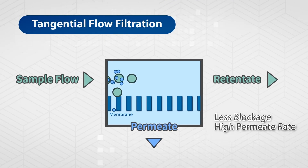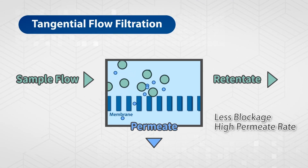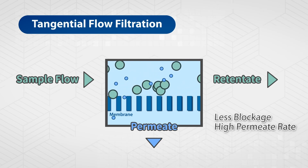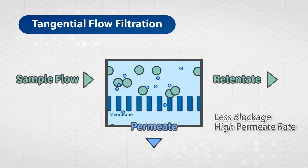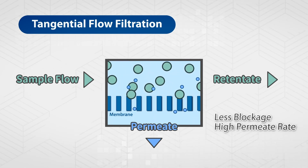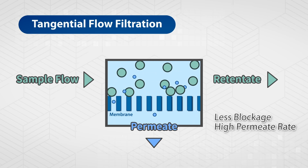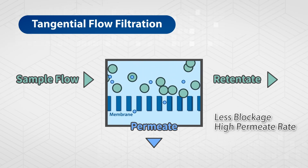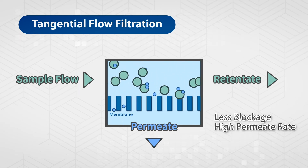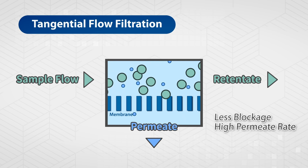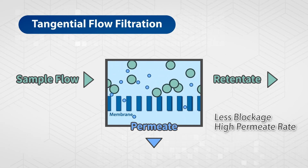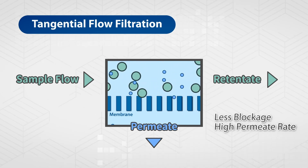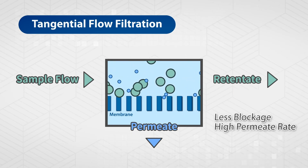With tangential flow filtration, the sample flows horizontally on the membrane surface. While small molecules pass through the membrane vertically, the remainders are continuously circulated, filtered, and flushed through the membrane, which effectively prevents molecules from accumulating on the membrane surface. It maintains the flow rate and performs concentration and diafiltration simultaneously.